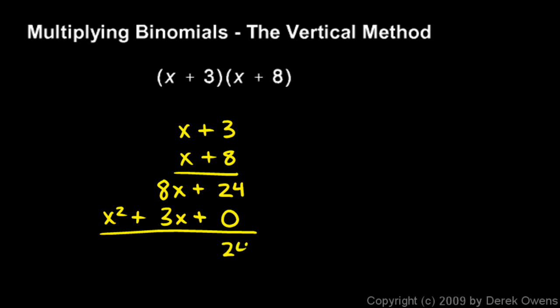So 24 and 0 gives me 24, and the 8x and 3x gives me 11x, and I put a plus sign there. Then the x squared here, and I put a plus sign. That's my answer: x squared plus 11x plus 24.